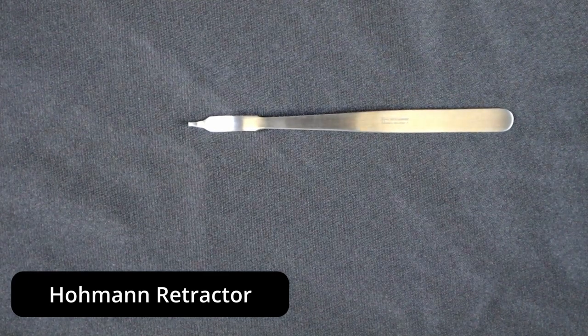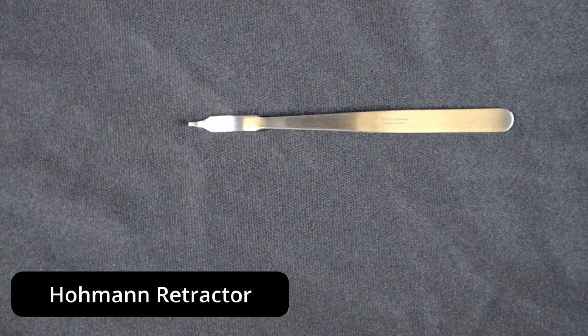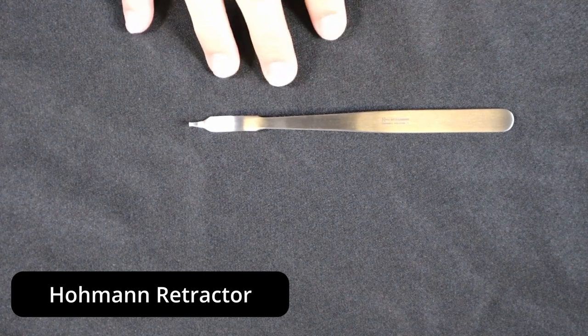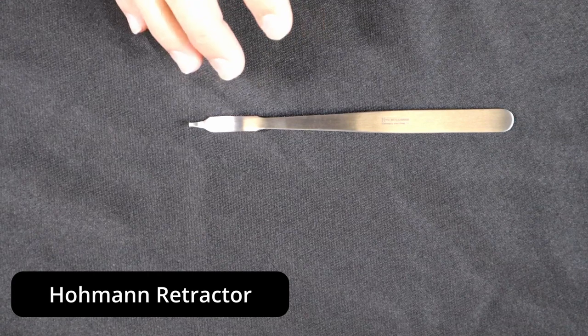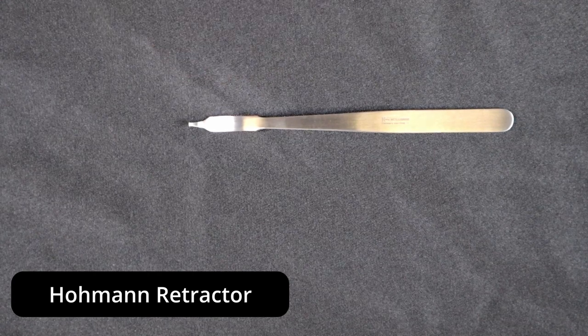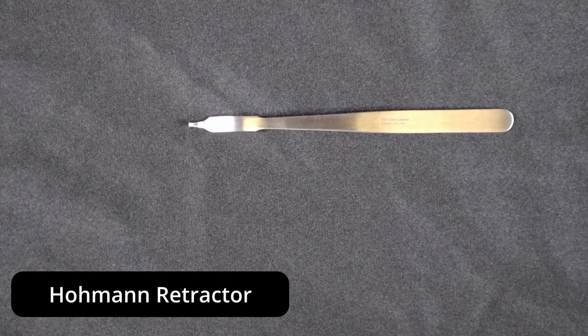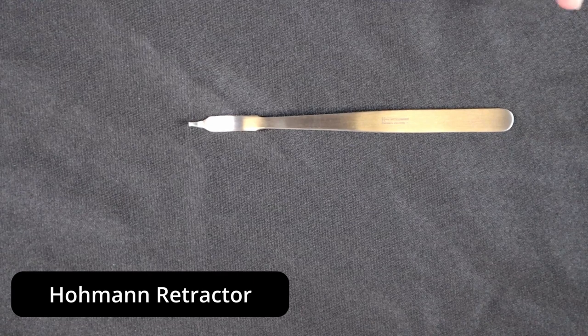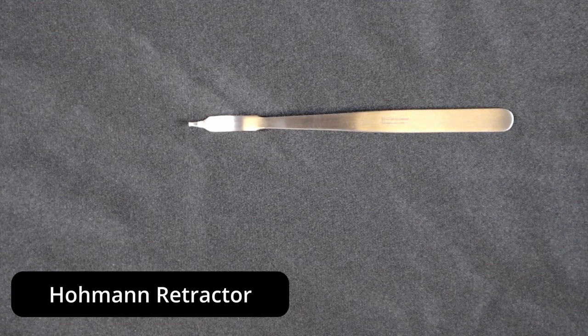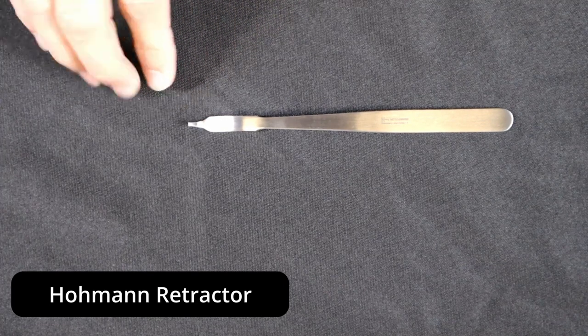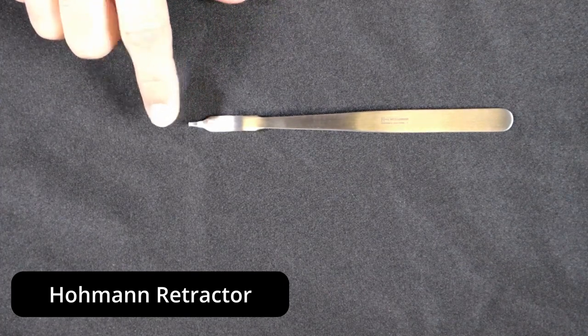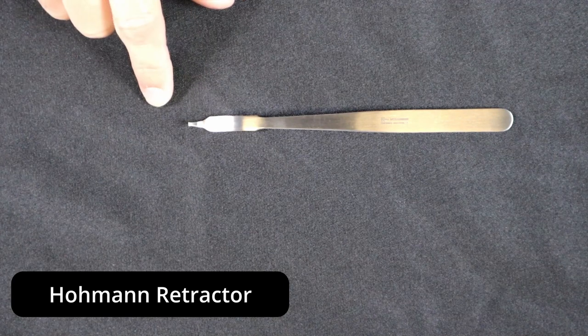Typically when you're assembling Hohmann retractors, especially these smaller versions, you'll see these go into paper sterilization bags often, or gather together in the bottom of a tray. Keep in mind that anytime you can do things to protect these distal tips, you're going to want to try to do it.